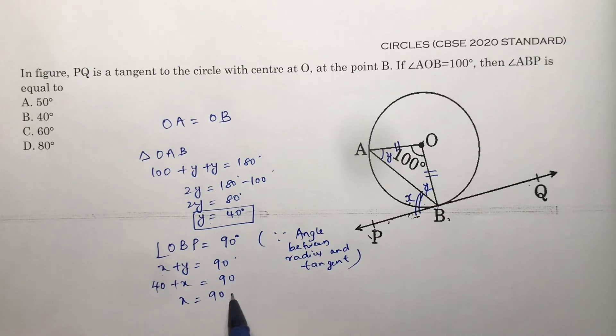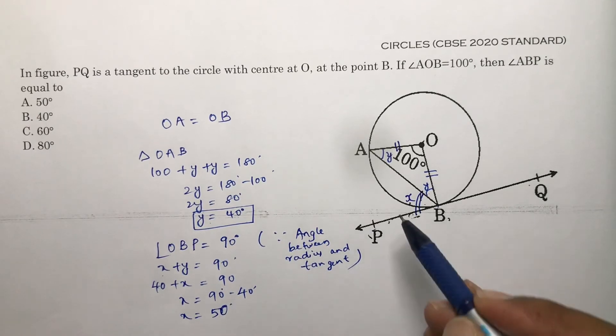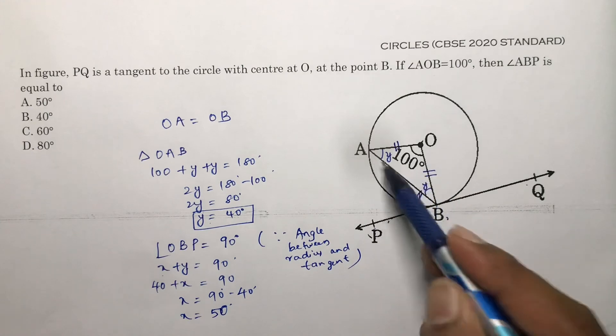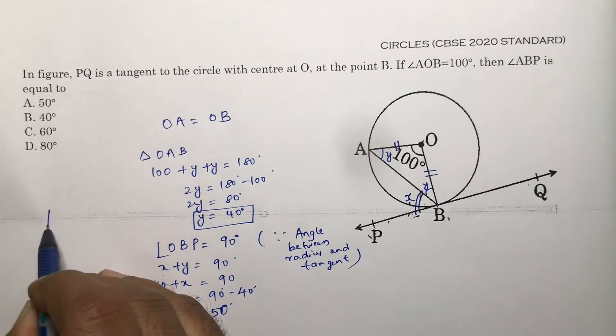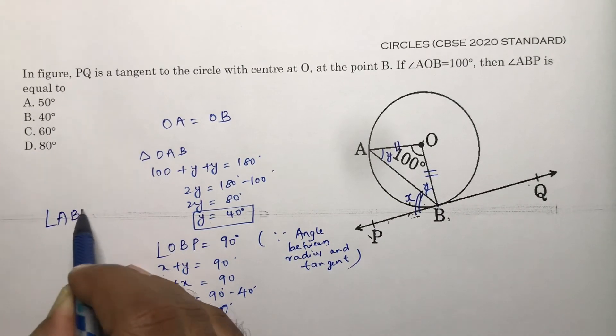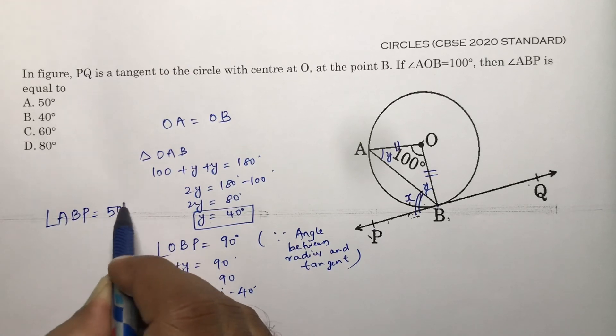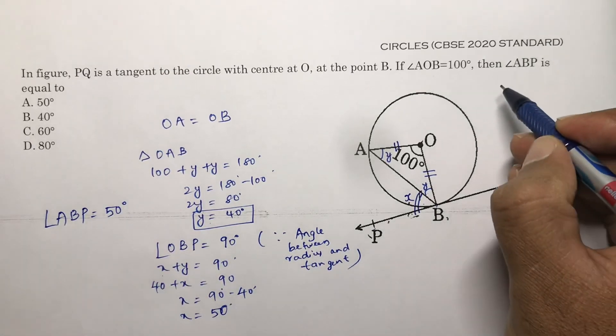Therefore X equals 90 minus 40 degrees, which is 50 degrees. Since X represents angle ABP, the answer is 50 degrees. The correct option is A.